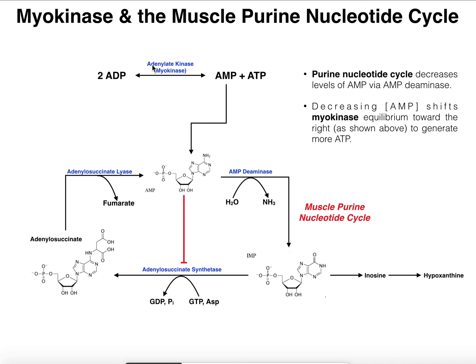Here I have the reaction of adenylate kinase, which in muscle is usually referred to as myokinase. If I have two molecules of adenosine diphosphate, one of the phosphates from one ADP molecule can be transferred to the other ADP, giving you one AMP and one ATP. The other thing to know about this reaction is it's freely reversible — AMP and ATP can combine, transferring one phosphate from ATP onto AMP, giving back two molecules of ADP.